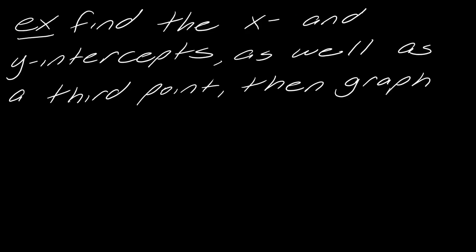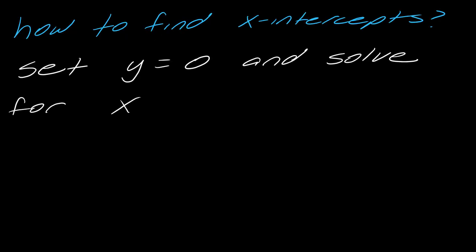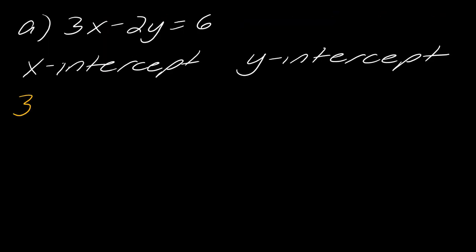Now I want to go through finding the x and y-intercepts as well as a third point, and then graph. The reason we want to find a third point is it's a little bit of a check to make sure that we've graphed properly. So here's our first example: 3x minus 2y equals 6. We're going to find our intercepts. For the x-intercept, we want to set the y equal to zero and solve for x. So let's set the y equal to zero.